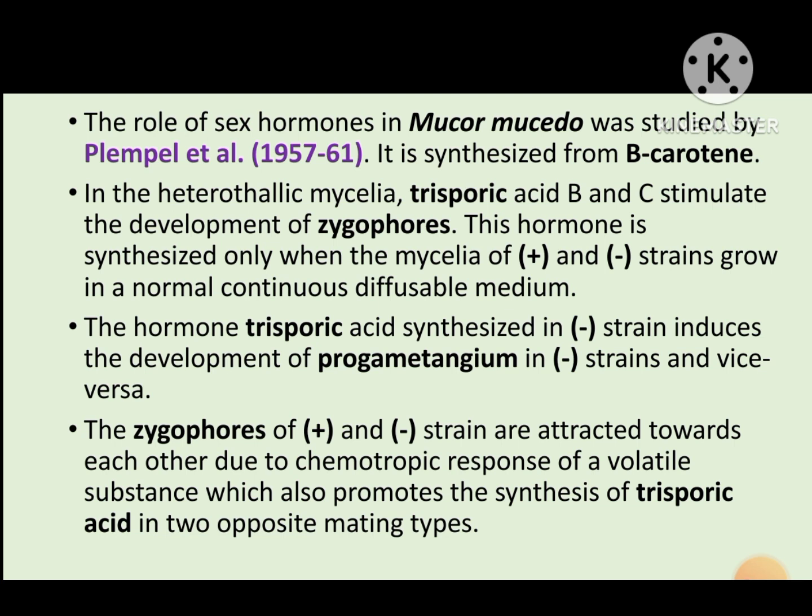The function of trisporic acid in Mucor is that it is used for the synthesis of beta-carotene. In heterothallic mycelia, trisporic acid B and C stimulate the development of progametangia — the structure formed before the gametangia.